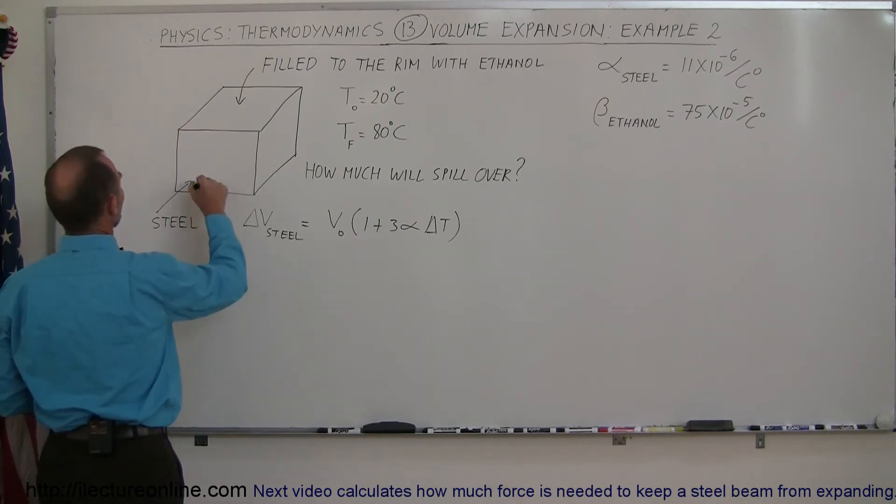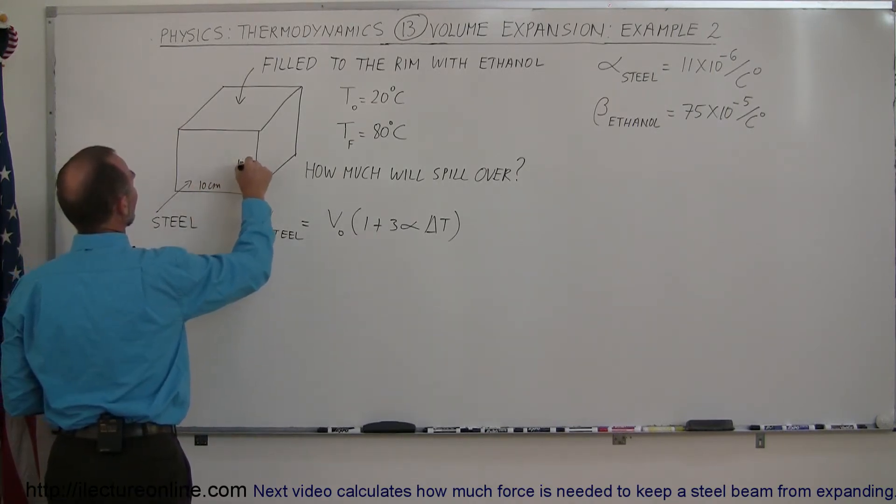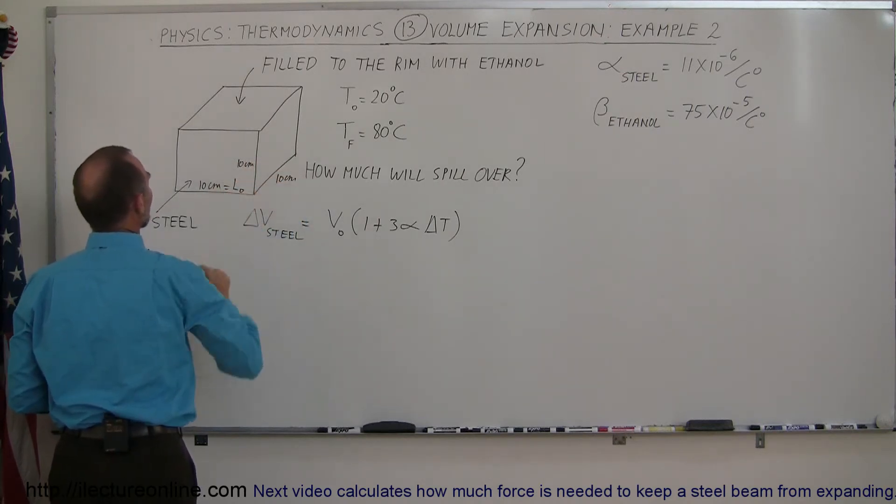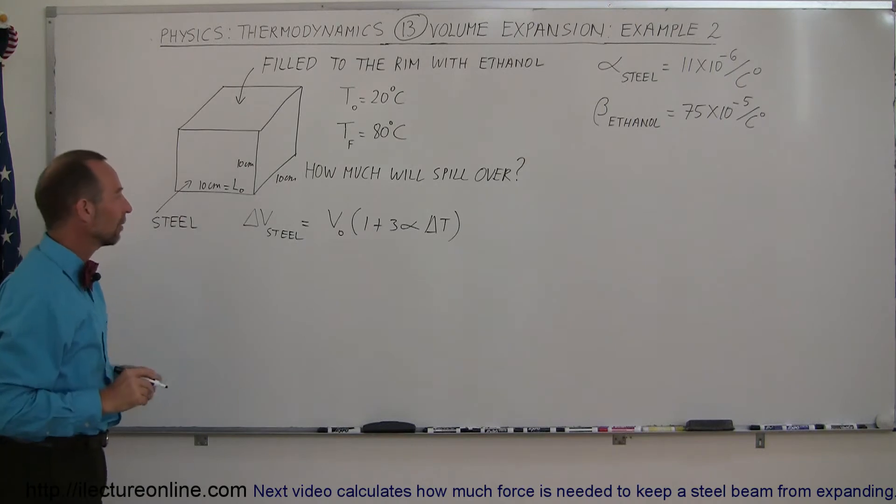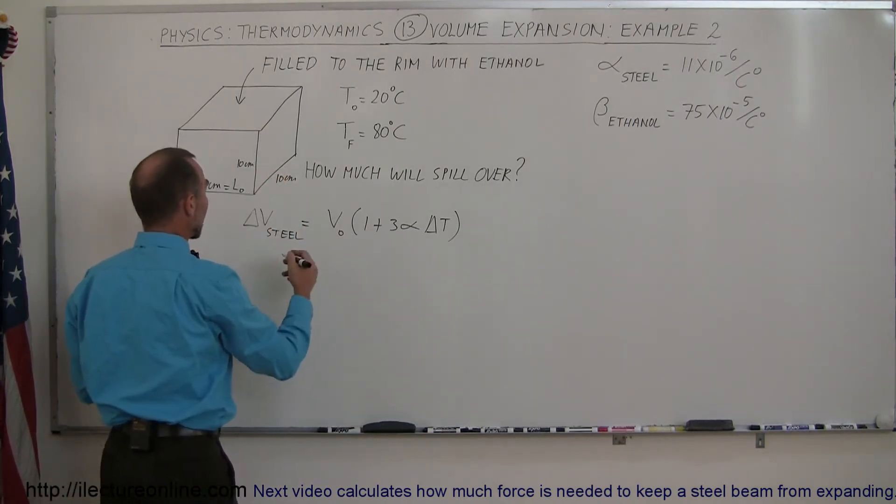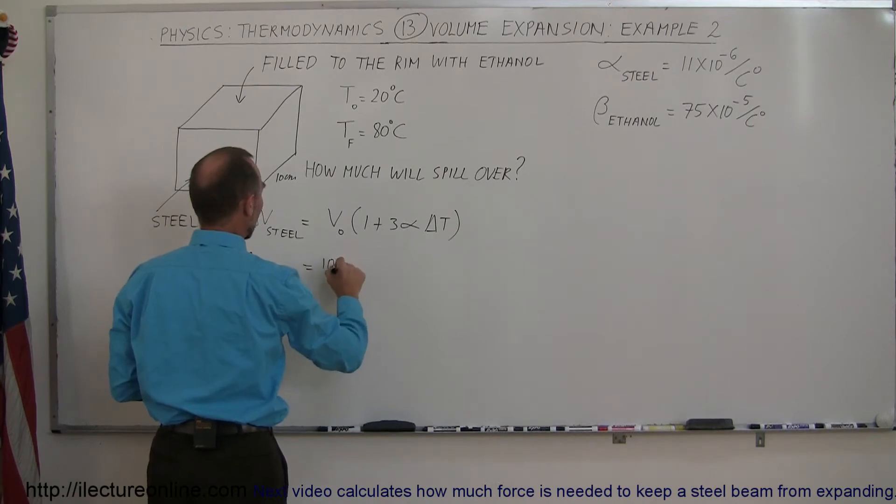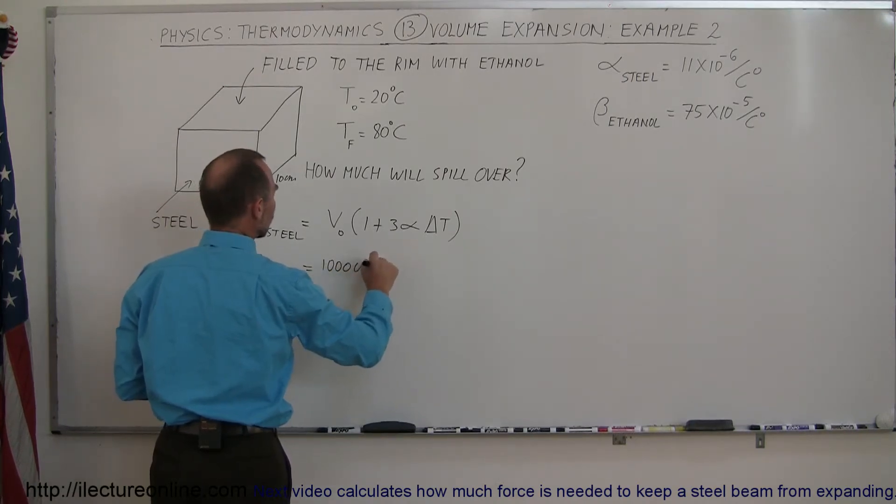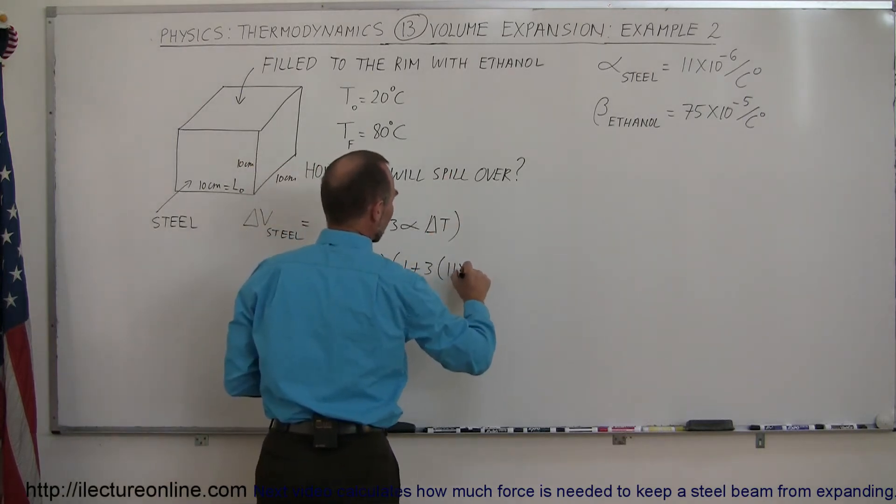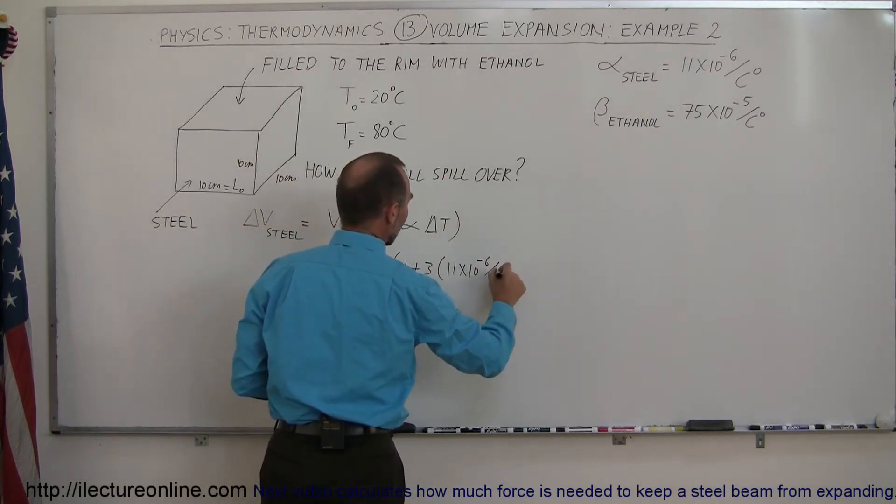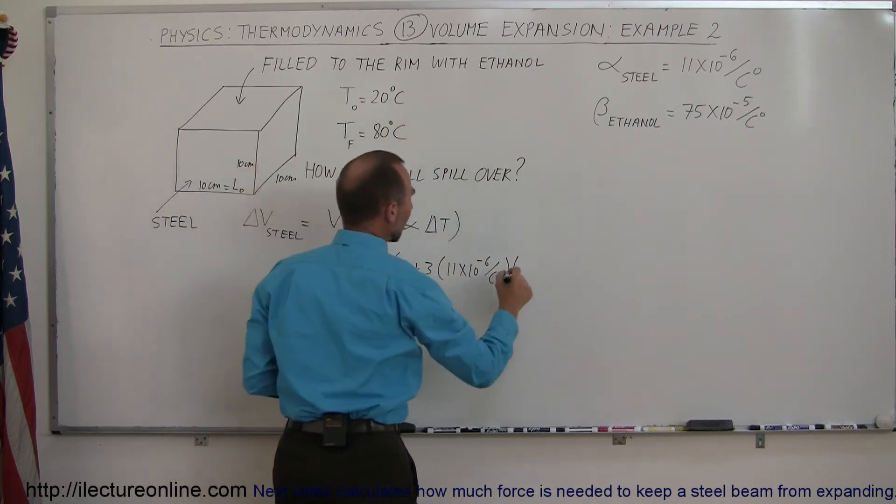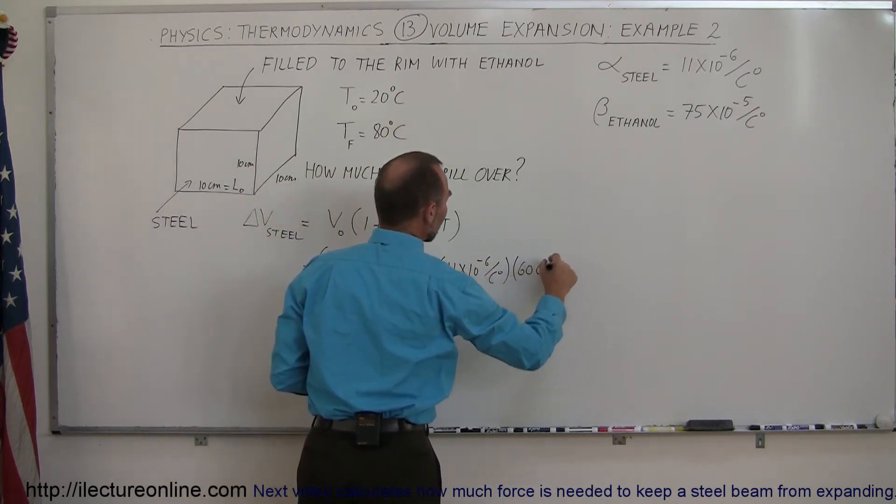So let's say that this is 10 centimeters by 10 centimeters by 10 centimeters, and so let's say that's the original length of the box. So that means that the volume would be 10 times 10 times 10, which would be 1,000 cubic centimeters, 1,000 centimeters cubed, times 1 plus 3 times 11 times 10 to the minus 6 per centigrade degree, times the change in the temperature from 20 to 80, that would be 60 centigrade degrees.